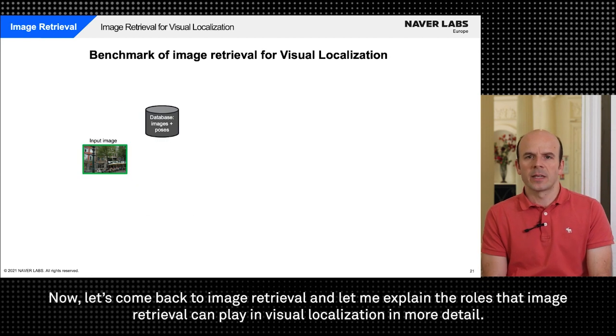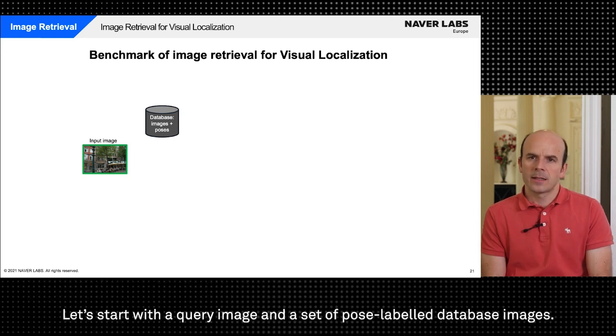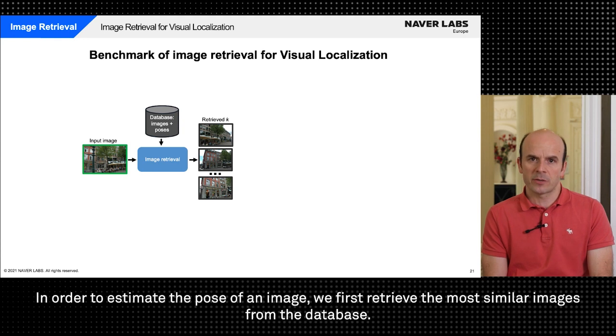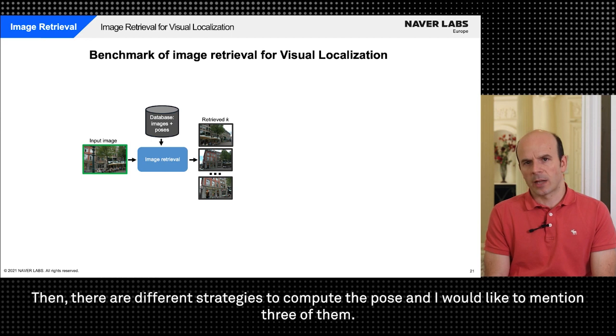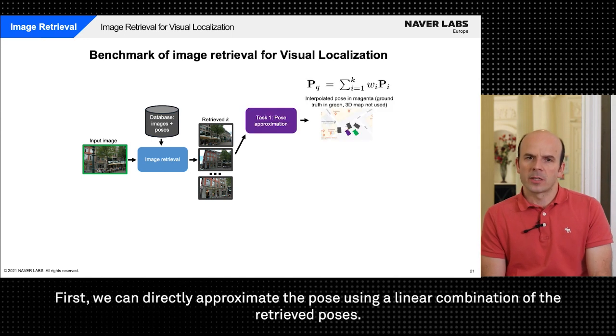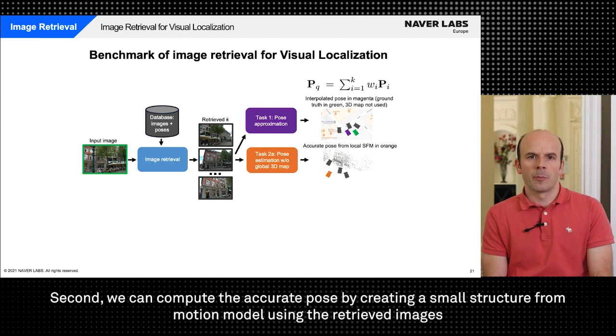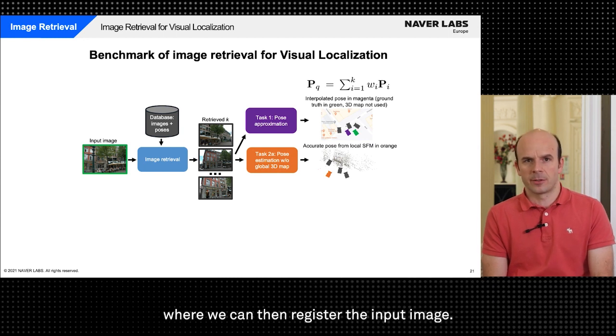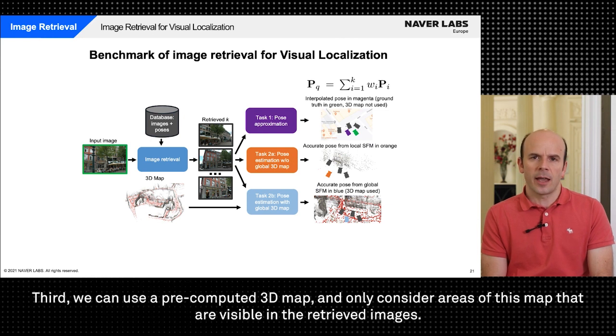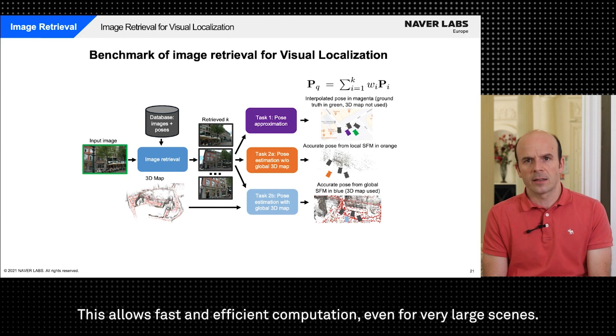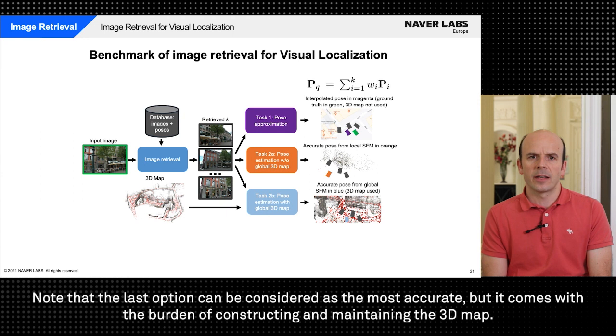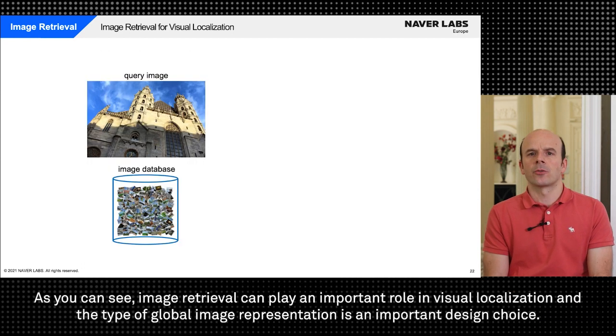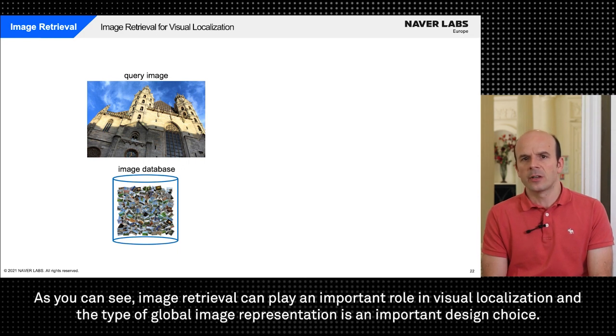Now let's come back to image retrieval and let me explain the roles that image retrieval can play in visual localization in more detail. Let's start with the query image and the set of pose labeled database images. In order to estimate the pose of an image we first retrieve the most similar images from the database. Then there are different strategies to compute the pose and I would like to mention three of them. First we can directly approximate the pose using a linear combination of the retrieved poses. Second we can compute the accurate pose by creating a small structure from motion model using the retrieved images where we can then register the input image. Third we can use a pre-computed 3D map and only consider areas of this map that are visible in the retrieved images. This allows fast and efficient computation even for very large scenes. Note that the last option can be considered as the most accurate but it comes with the burden of constructing and maintaining the 3D map. As you can see image retrieval can play an important role in visual localization and the type of global image representation is an important design choice.